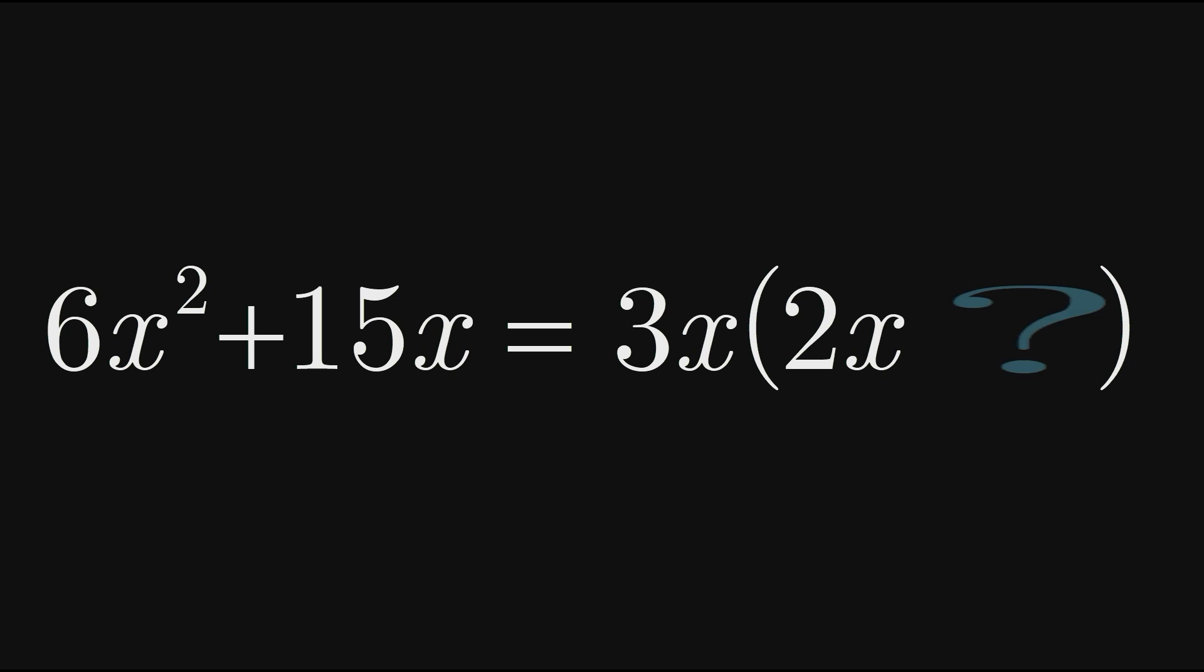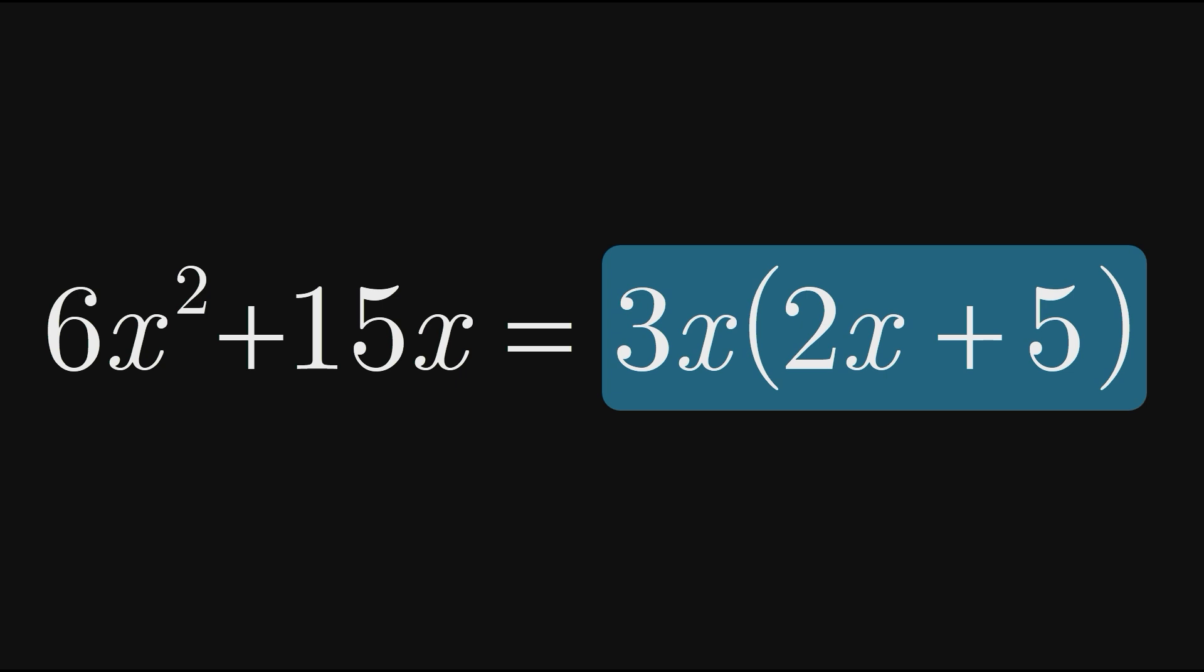Finally, to find the second term in the brackets, we ask ourselves what 3x must be multiplied by to give the 15x term of the expanded expression. Well, 3x times 5 is 15x, so we need to add a constant term of 5 in the brackets. We now have the factored version of 6x squared plus 15x, which is 3x times 2x plus 5.